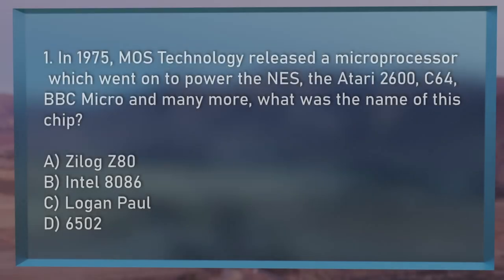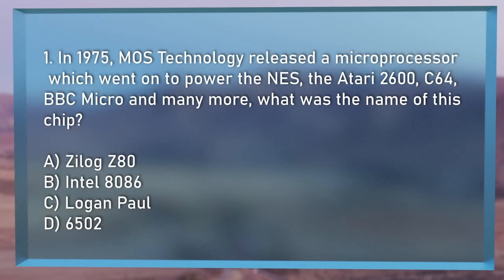Round number 4, question 1: In 1975, MOS Technology released a microprocessor priced at about one-sixth the cost of most competition. This chip went on to power the original NES, the Nintendo Entertainment System, the Atari 2600, the C64, the BBC Micro, and many more. What was the name of this chip from MOS Technology? A, the Zilog Z80; B, the Intel 8086; C, Logan Paul; or D, the 6502?